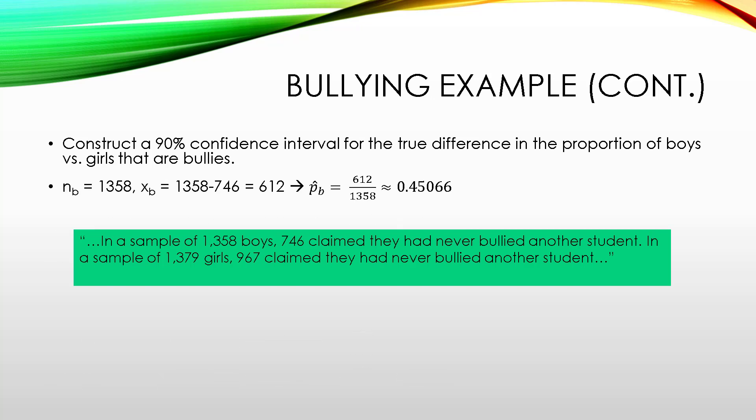So let's flip this around. We can do this by taking the sample size and subtracting off the number that have never bullied, and that will give us the number that have bullied. We can use this to create a proportion of our boy students that have bullied another student. So that will be 612 over 1,358, which is about 45%. We can do the same for the girls, and we get that approximately 30% of the girls have bullied another student.